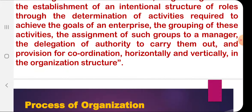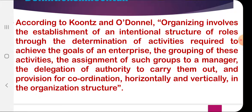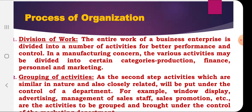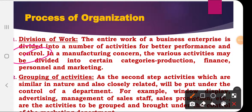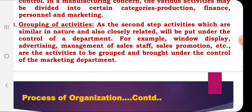Moving to the next topic: the process of organization — the different steps involved. The first step is division of work. In an organization, different works need to be divided into different activities so that they can be performed in a better way and control can be easily attained. In a manufacturing concern, there may be different activities like production, finance, marketing, personnel, and sales.